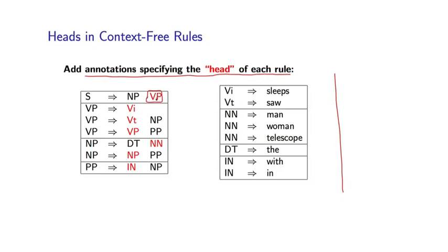So I've used red to denote the head of each rule. VP is the head of S, VI is the head of VP, VT is the head of VP, and so on. So we're choosing one of the children to be the head of the rule. This is in some sense an additional piece of information in our context-free grammar. We don't just have the rules, we also have annotations specifying the heads.